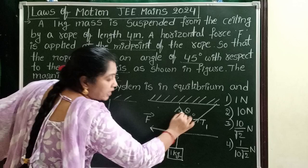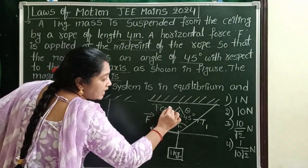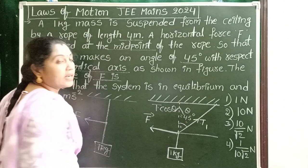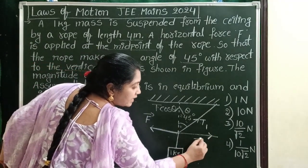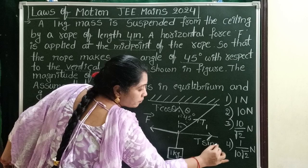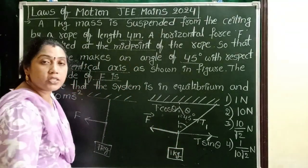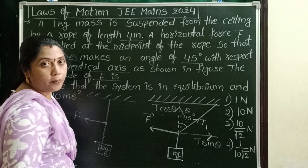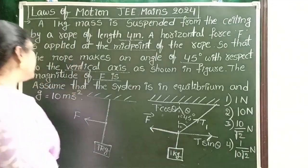So vertically upward direction, the component of the tensile force is T cos theta. This is the vertical component. And the horizontal component is T sin theta. These two are the rectangular components of the tensile force. But what is the assumption here?